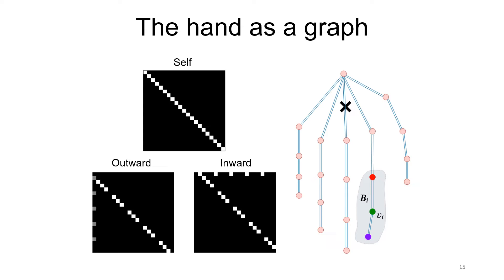First, self-connections. Second, inward connections, indicating links facing away from the center of gravity. And last, outward connections, which is opposite to inward connections definition.